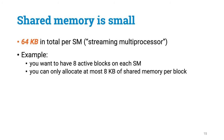One key point before we continue: there is very little shared memory. Each SM — that is, streaming multiprocessor — has got only 64 kilobytes of shared memory in total, and this is shared among all blocks that are active. So if you'd like to have, say, 8 blocks active per SM, you can only use 8 kilobytes of shared memory per block. This isn't much, but it is very fast memory, so you can try to use it a bit like L1 cache in CPUs.